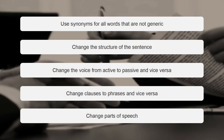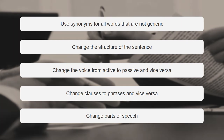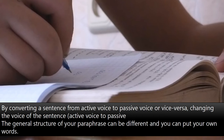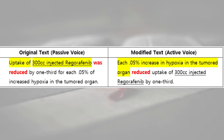Strategies you can use for paraphrasing: use synonyms for all words that are not generic — basic words like 'world,' 'food,' or 'science' do not need to be changed. Change the structure of the sentence; change the voice from active to passive or vice versa; change clauses to phrases and vice versa; and change parts of speech. For example, by converting a sentence from active to passive voice or vice versa, you can change the sentence structure while keeping the same meaning.